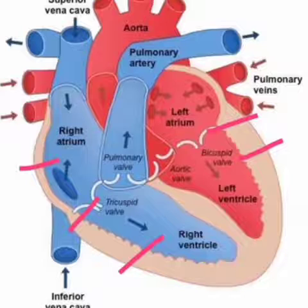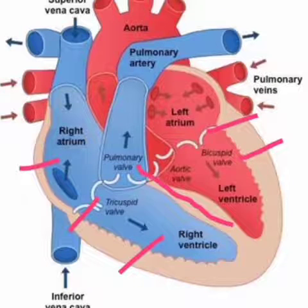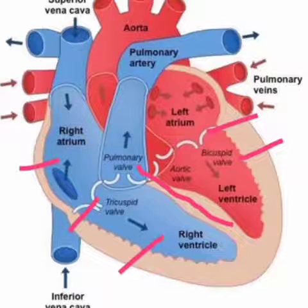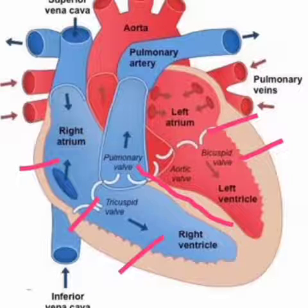The right part and the left part of the heart are separated by a septum. In between the right atrium and left atrium, the inter-auricular septum, or inter-atrial septum, is present. In between the right ventricle and left ventricle, there is another septum known as the inter-ventricular septum.